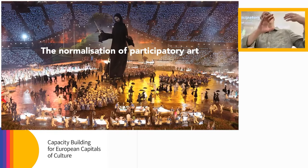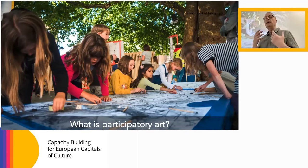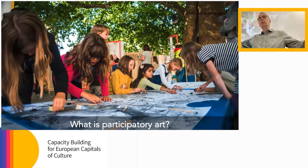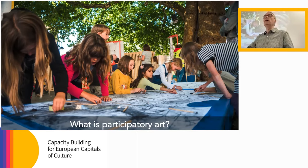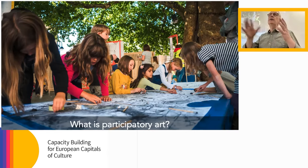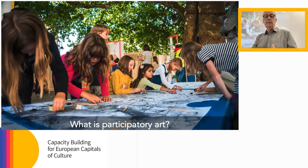I want to talk about why this has become so important and, crucially, what it is. I use only two terms: participatory art to mean the whole broad spectrum, and community art to mean the work I've specifically been involved in and care about. There are lots of other words used in the art world — socially engaged practice, relational aesthetics, arts and development — but they're unhelpful, largely because they make everything more complicated for people who don't work in the art world to understand.